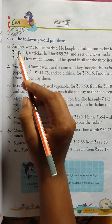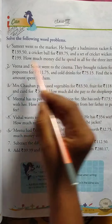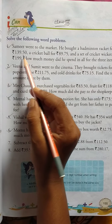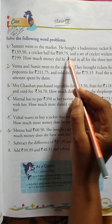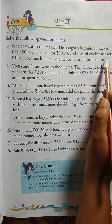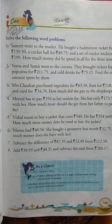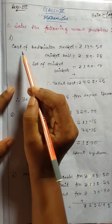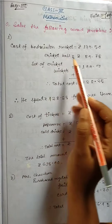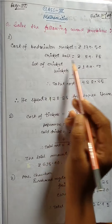Solve the following word problems. Samir went to the market. He bought a badminton racket for rupee 139.50, a cricket ball for rupee 89.75, and a set of cricket wickets for rupee 199. How much money did he spend in all for the three items?